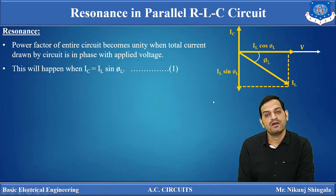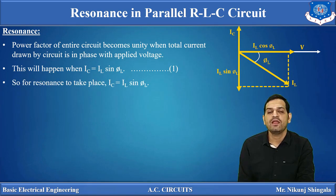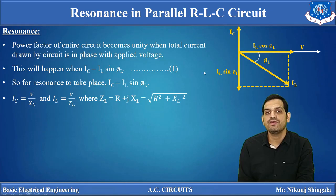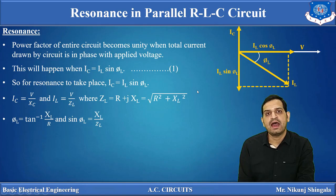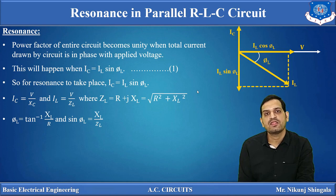So we can say resonance has occurred because there is no phase angle between I and V. The condition for resonance to take place is IC = IL sin φL. We know IC = V / XC and IL = V / ZL, because IL flows through RL. ZL = R + jXL, that is √(R² + XL²). For the RL branch, if we draw the impedance triangle, we get φL = tan⁻¹(XL / R) and sin φL = XL / ZL.